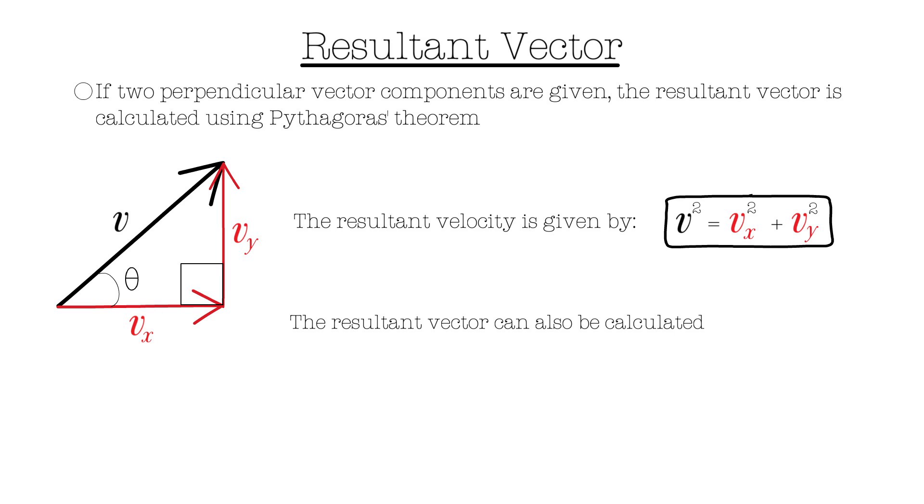The resultant vector can also be calculated using trigonometry if one of the components and the angle is known. You can refer to the equations derived using SOHCAHTOA.